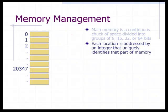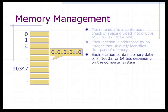Each location is addressed by integers that uniquely identify that part of memory — for example, location 0 or location 20,000-something. At each location contains binary data of 8, 16, 32, or 64-bits, depending on the computer system.